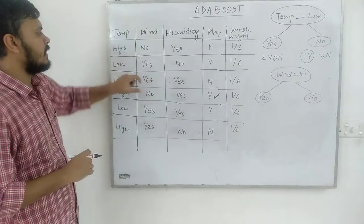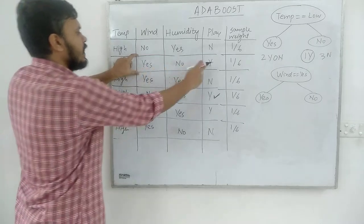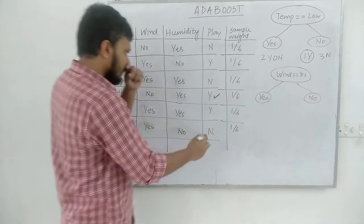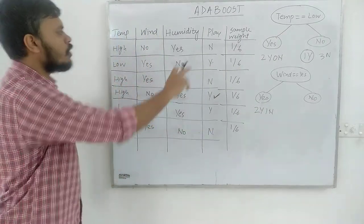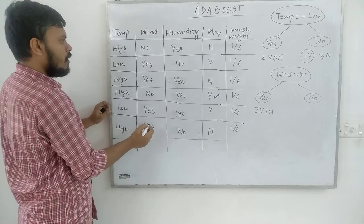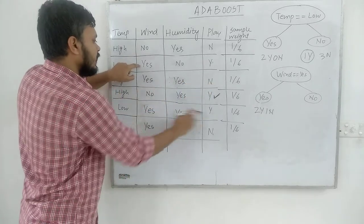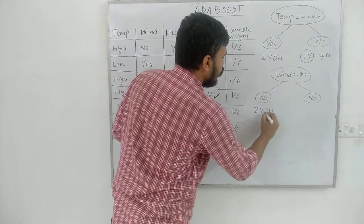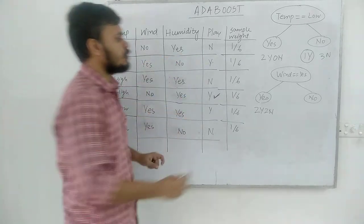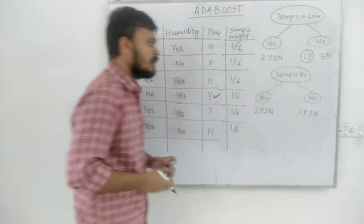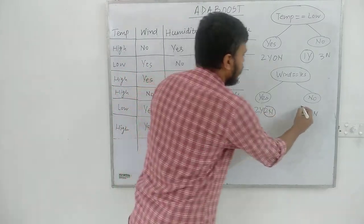Looking at the yes points — there are three of them. Two are correctly classified and one is incorrectly classified. Now for the no points: there are two yes and two no points. So in the no branch we have one yes and one no. Overall, this decision stump is making three mistakes.